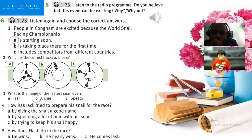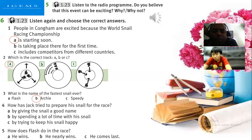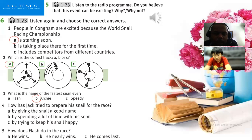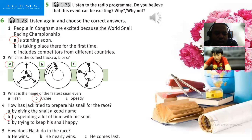Did you listen well? Yes, I think so. Number four — how has Jack tried to prepare his snail for the race? He's spending a lot of time with him. Which answer — A, B, or C? B — by spending a lot of time. That's right. How does Flash do in the race? He wins? No — he came last. That is correct.